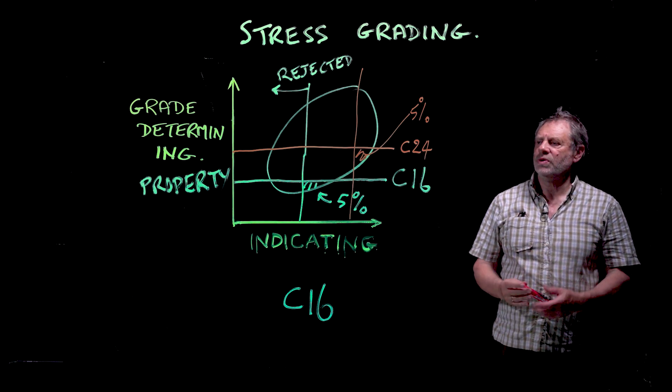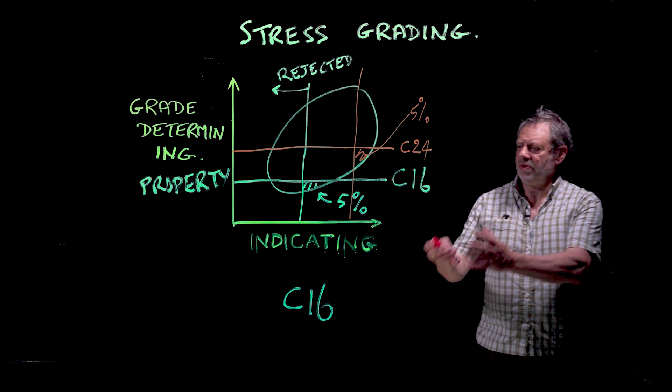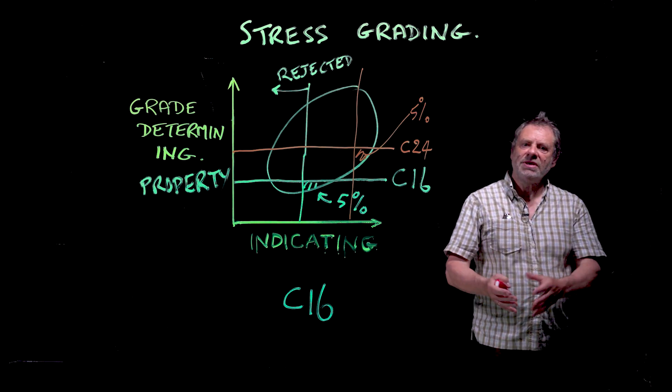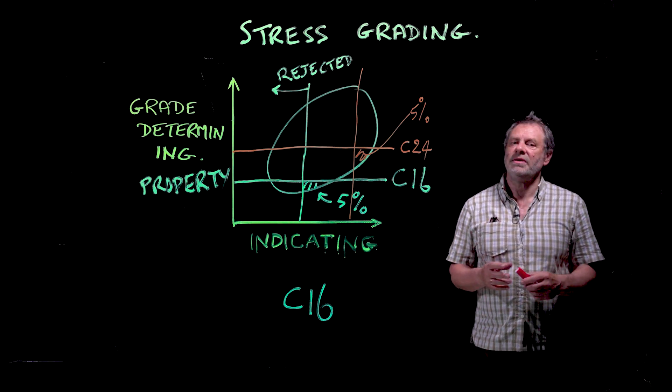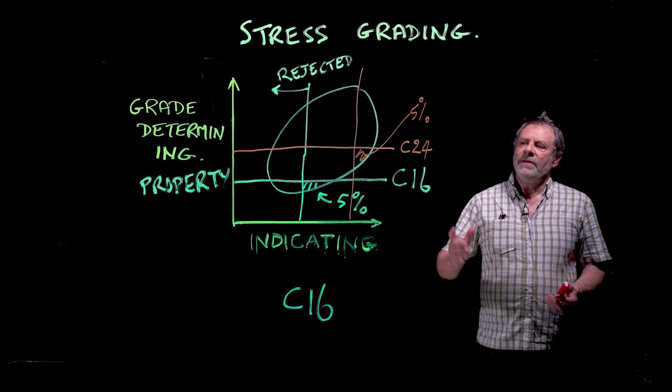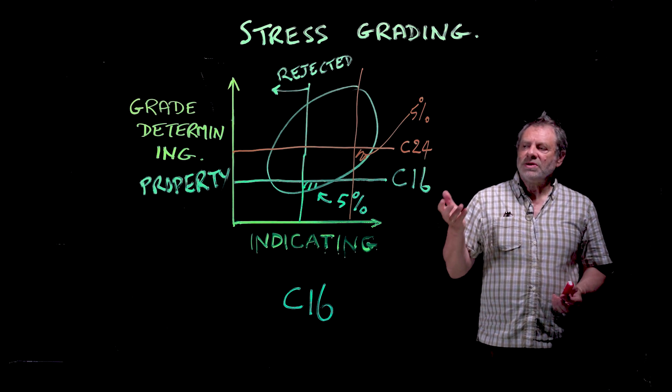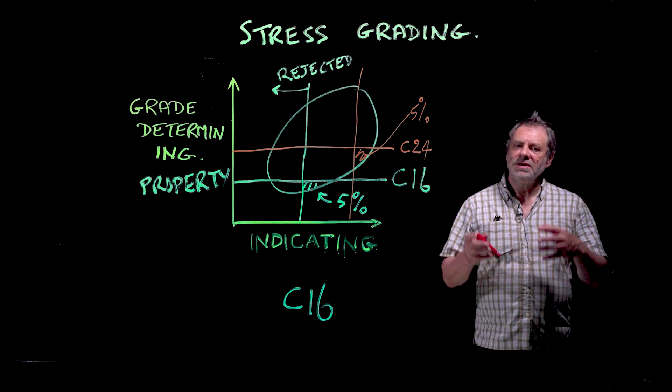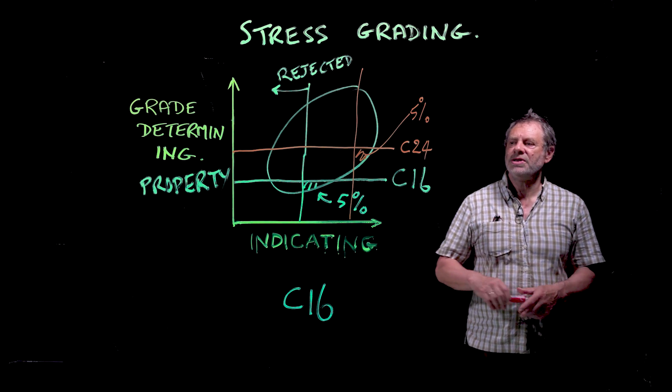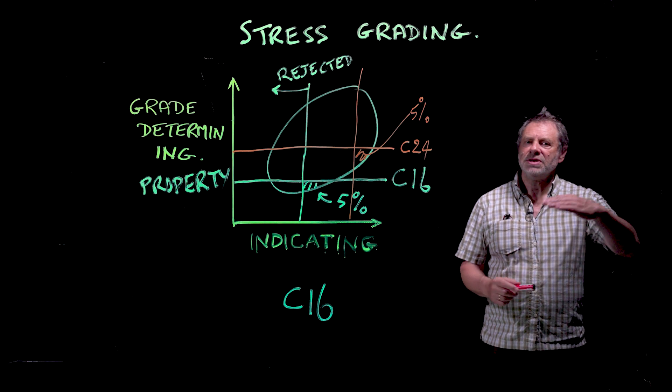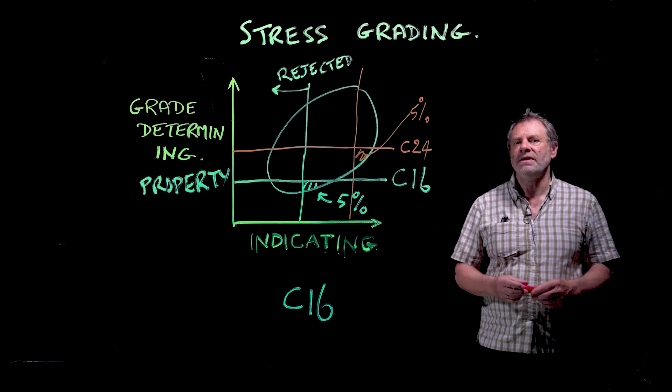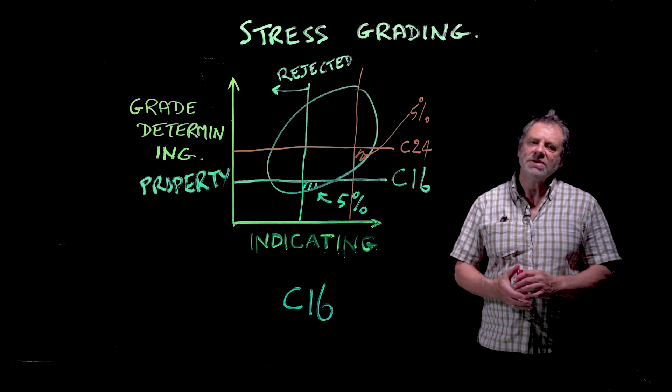But I have to emphasize, we're not talking about individual pieces. We don't know anything about the individual piece; it's all about the behavior of the population. The reason it's done this way is because the design rules are based upon assumptions about the population - that five percent sits below this line - and they design appropriate safety factors to take account of that.